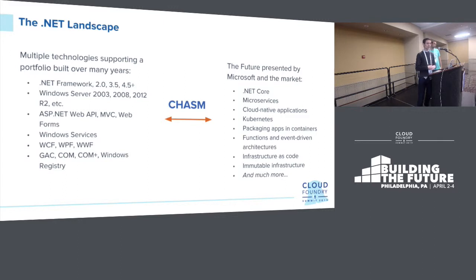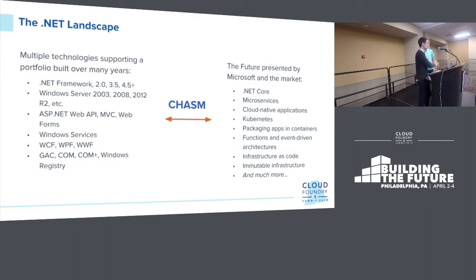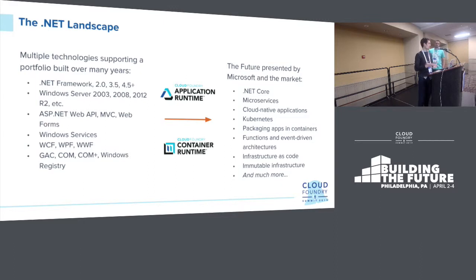Windows 2008 is a big one this year since it's at end-of-life support. You might end up with a portfolio that includes 2003, 2012 R2, and tight coupling between apps and servers. On the right-hand side of the slide, it represents the future — what Cloud Foundry and the open source ecosystem has been talking about for years: .NET Core, microservices, cloud-native applications, Kubernetes. There's a real chasm between the enterprise reality and the future being marketed, and Cloud Foundry application runtime and container runtime is the bridge to get businesses from that world to the future.